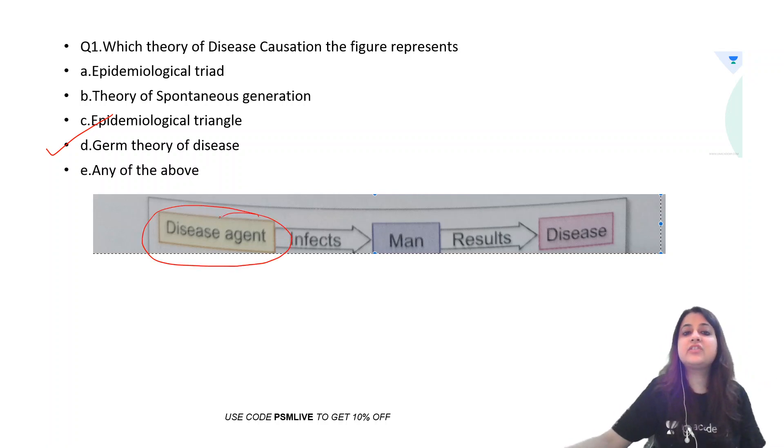Why? Here it is disease agent. We are solely showing the disease agent to be responsible for the occurrence of a disease. This theory was proposed by Louis Pasteur.